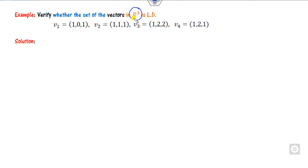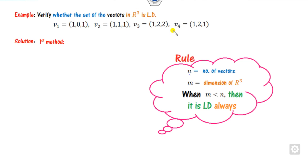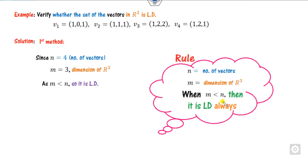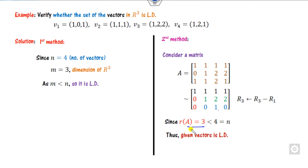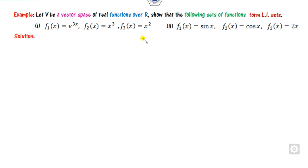There is an important theorem: if n is the number of vectors and the dimension of the vector space is less than n, then the vectors are always LD. Here we have 4 vectors in a 3-dimensional vector space (dimension = 3 < n = 4), so they are LD. Alternatively, write the matrix with v1, v2, v3, v4 as columns, find the rank = 3, which is less than 4, confirming LD.